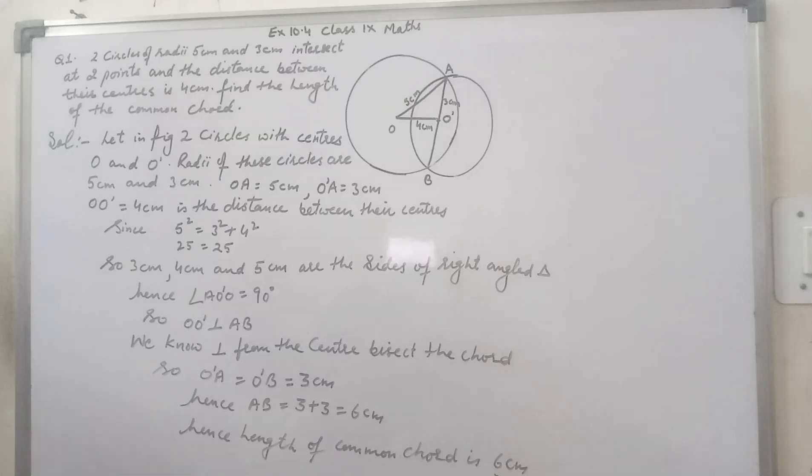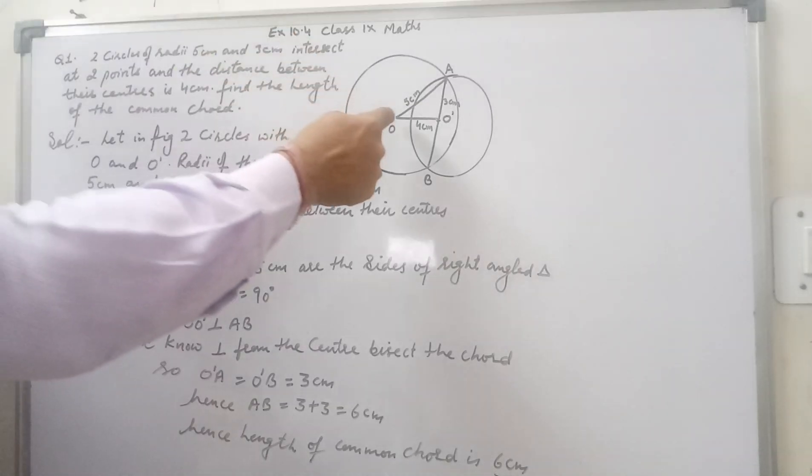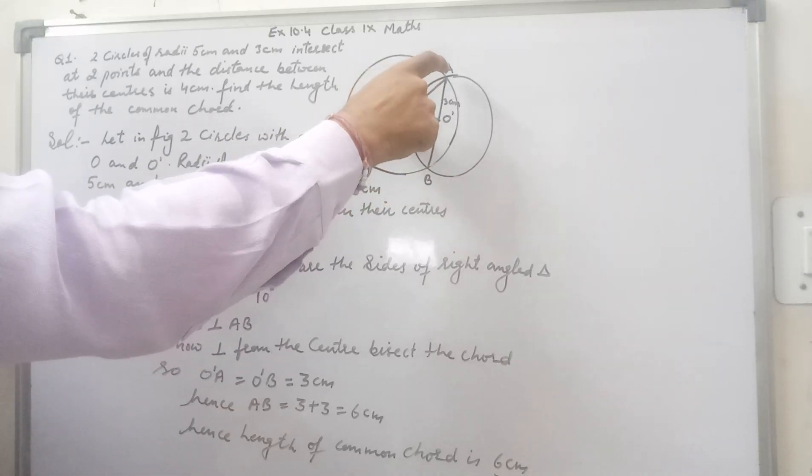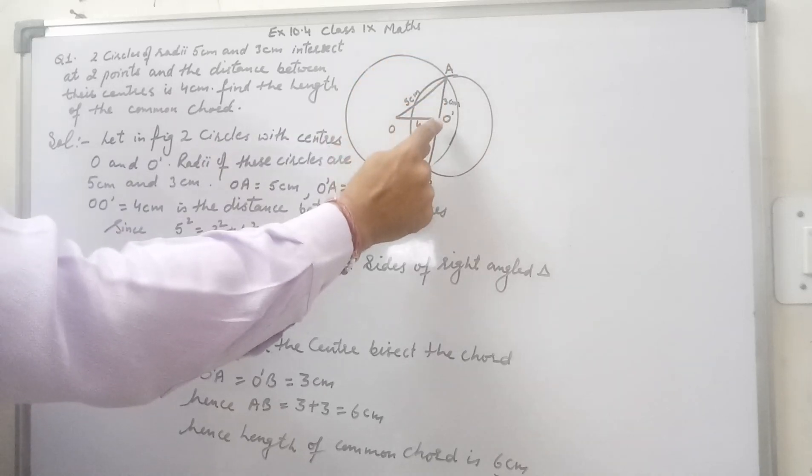If they are Pythagorean triplet then this is a right angle triangle and the angle opposite to the longest side that is OA is 90 degree.